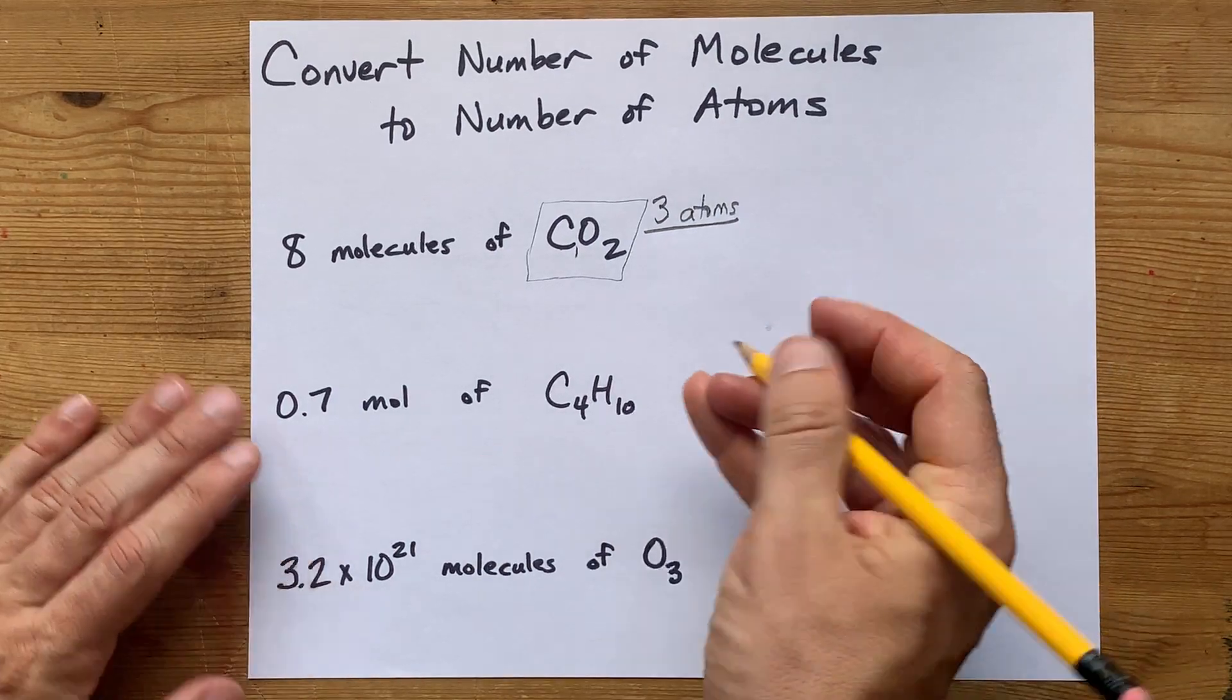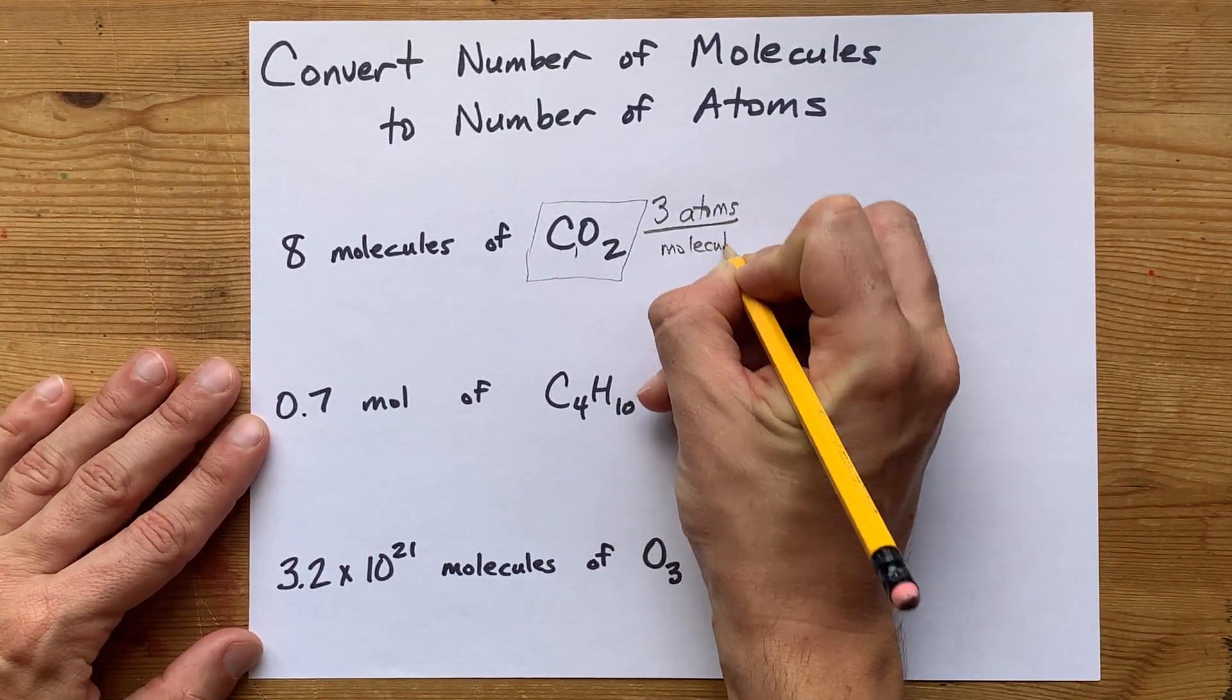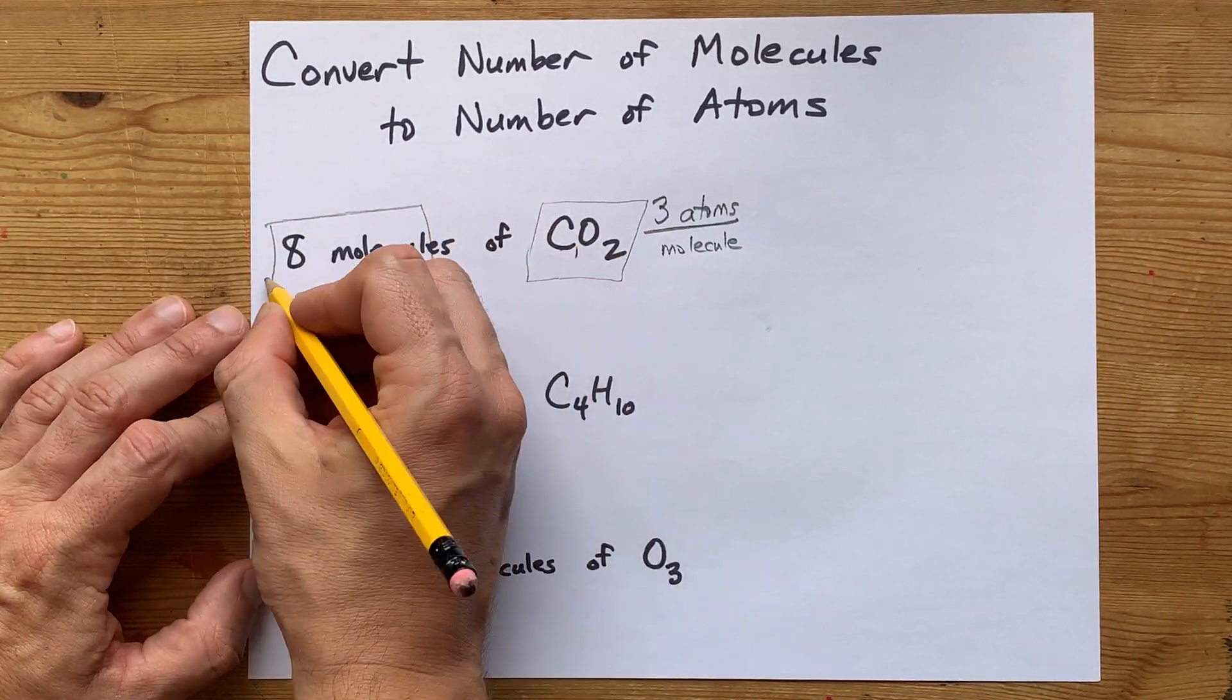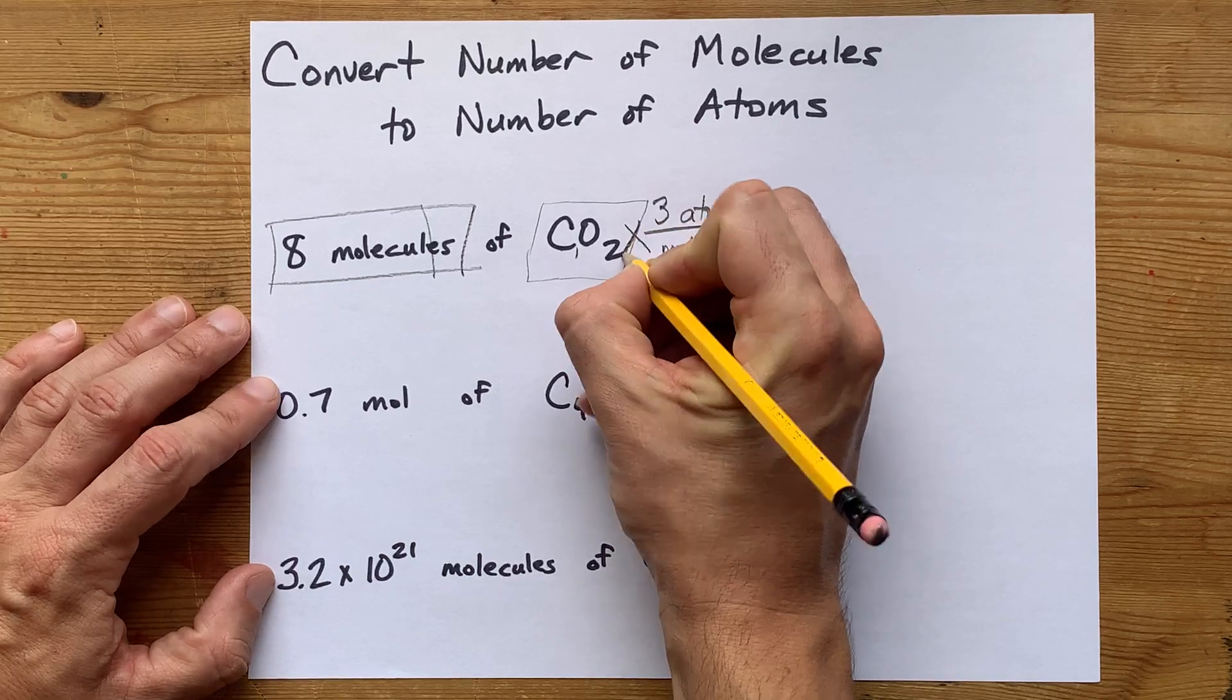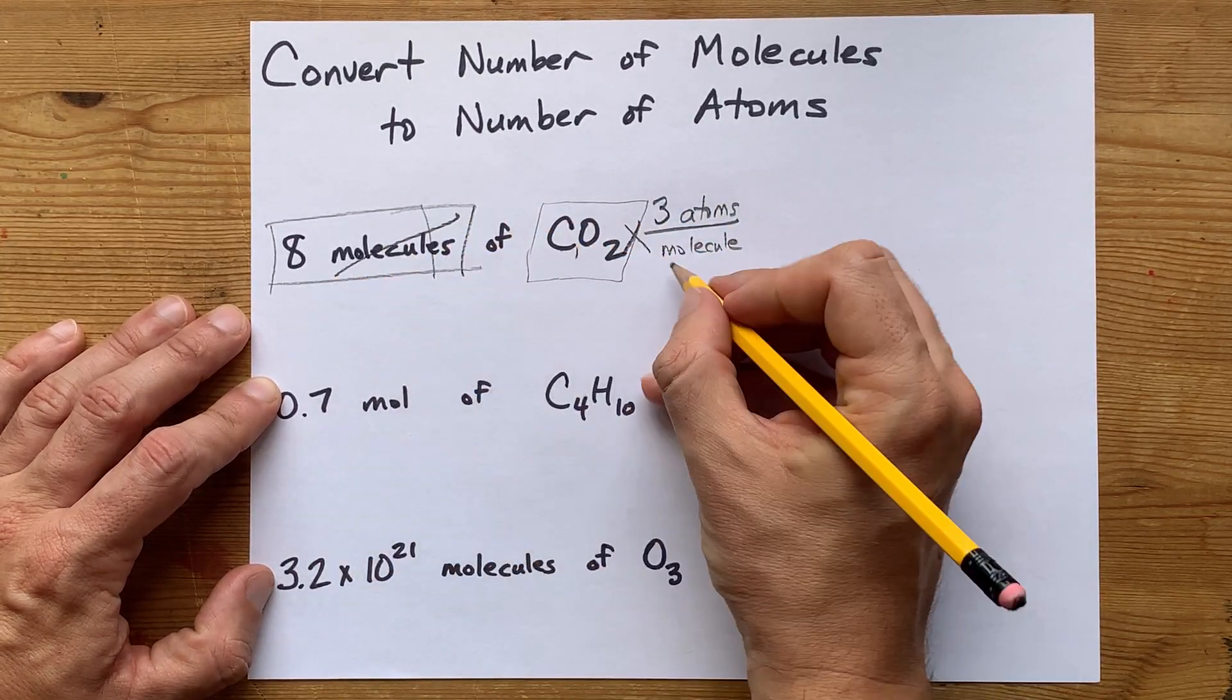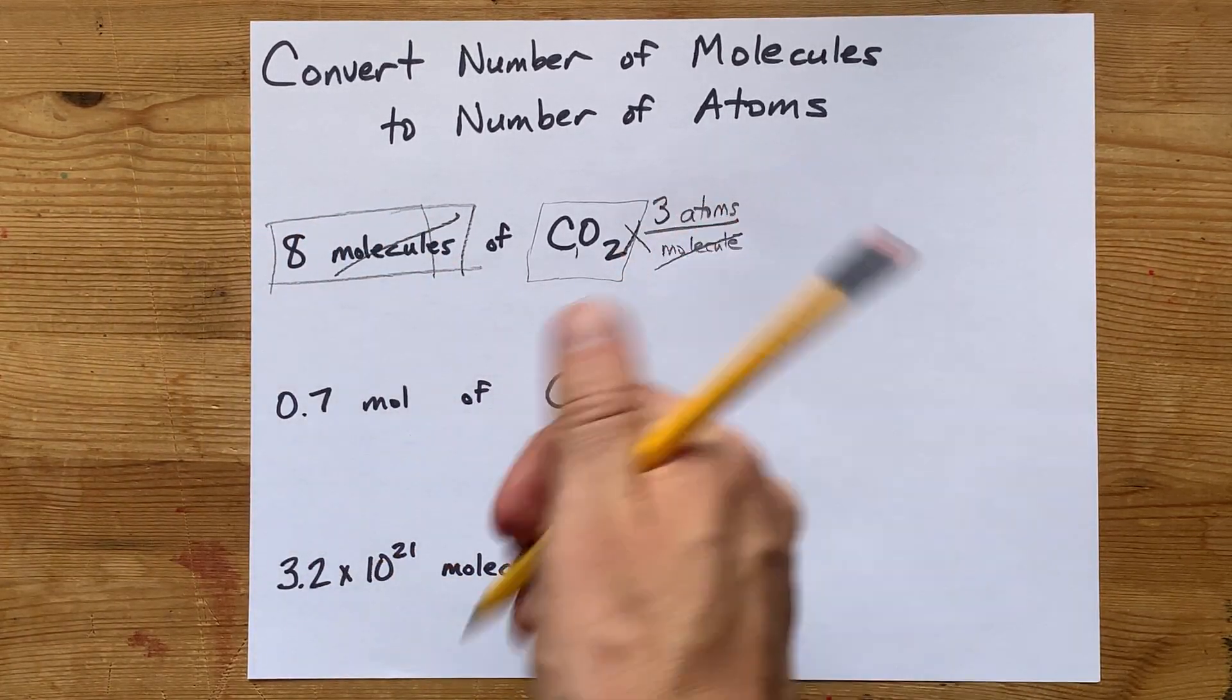What you can do is write that as three atoms per molecule, and then maybe it makes it obvious that you'll take the number of molecules, eight, and multiply it by that number of atoms per molecule. That way, your molecules unit cancels out and you're left with just atoms.